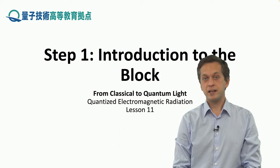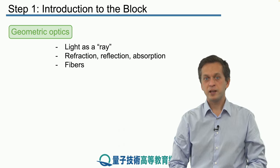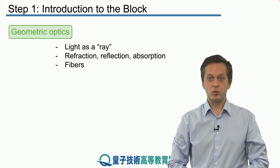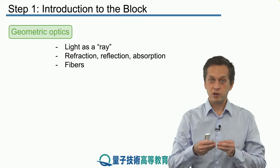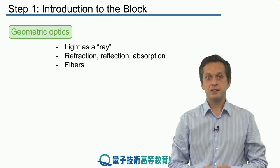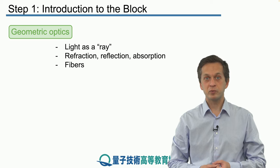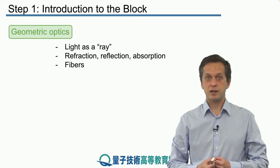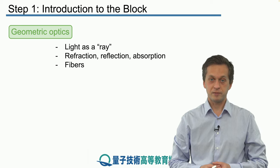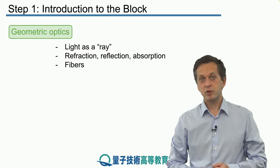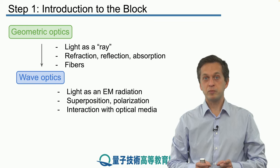Let's see what awaits us in the next three lessons. We began treating light using geometric optics in the previous module, where light is considered to be a ray traveling in straight lines, and this allowed us to talk about phenomena like refraction, reflection, absorption, and we applied it to discuss fibers and how to transport light across long distances. In this module so far, we have advanced our description of light to using Maxwell's equations.